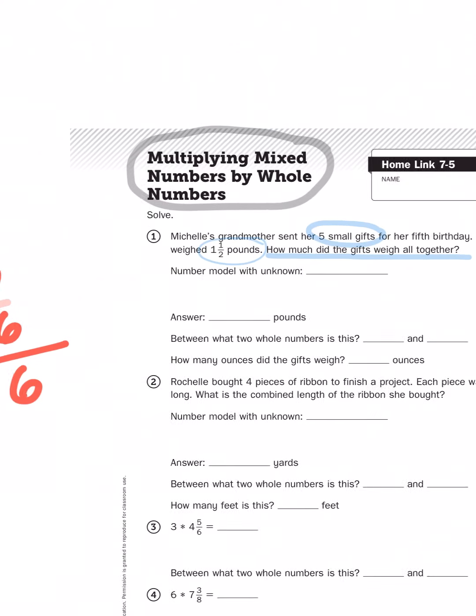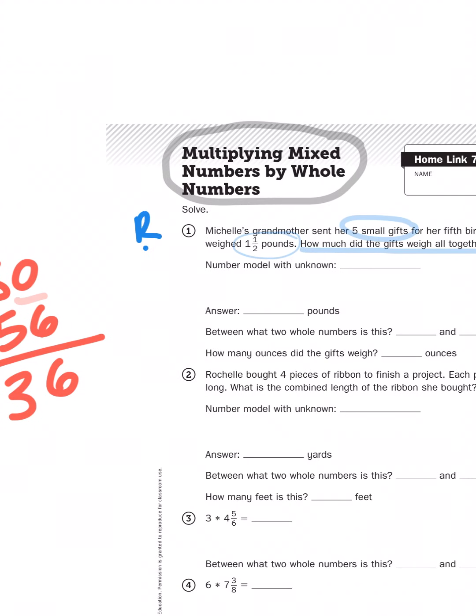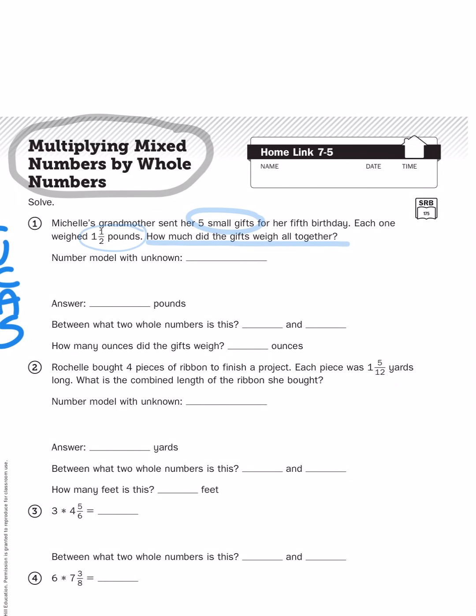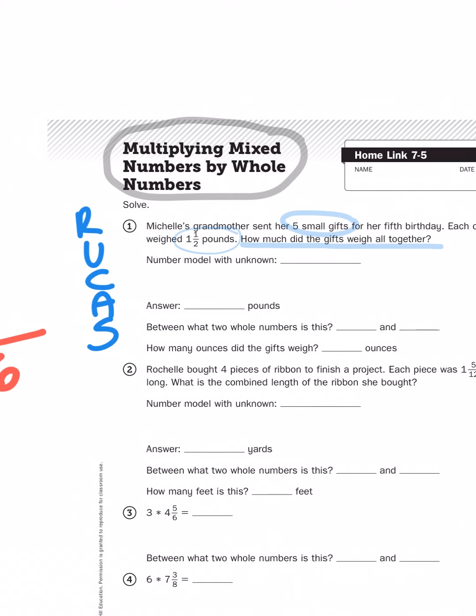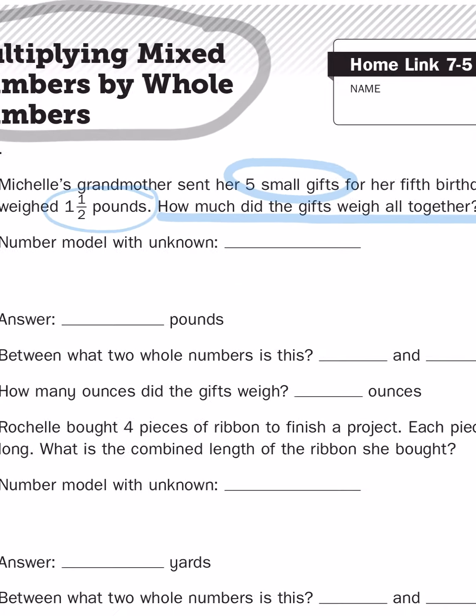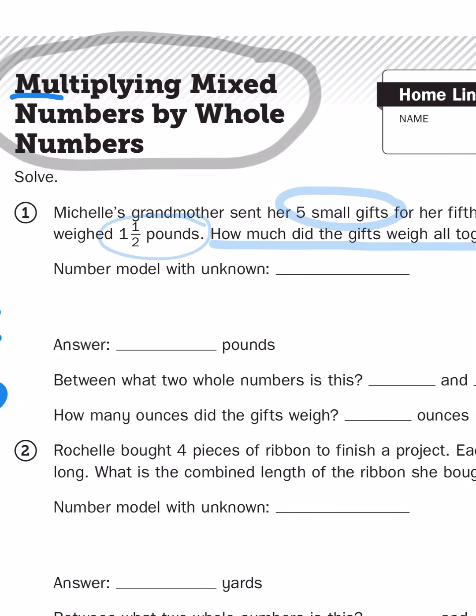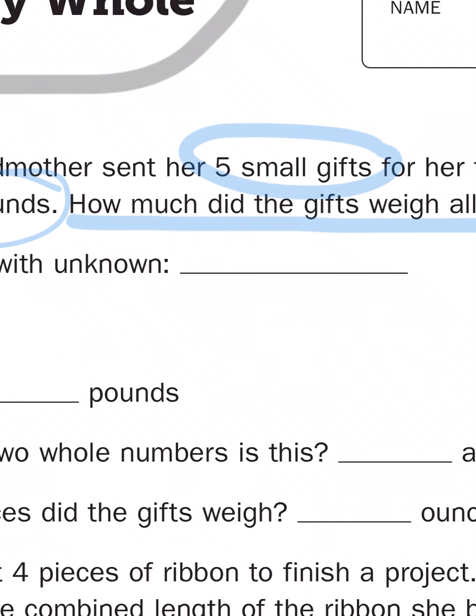Okay. Now, typically when I approach a number story problem, I use that RUCKUS strategy. I reread, I underline the problem, I circle the important information, I come up with an action plan, and I solve. Well, I was kind of doing that as I was going. So Michelle's grandmother sent her five small gifts for a fifth birthday. Each one weighed one and a half pounds. How much did the gifts weigh all together? Well, I already underlined the question, and I circled the two key pieces of information we need. And I know what my action plan is going to be, because the title of this assessment, or this assignment, is multiplying mixed numbers. Okay. So I know I'm going to multiply mixed numbers. And I'm going to multiply five times one and a half. And we'll say equals G for gifts.